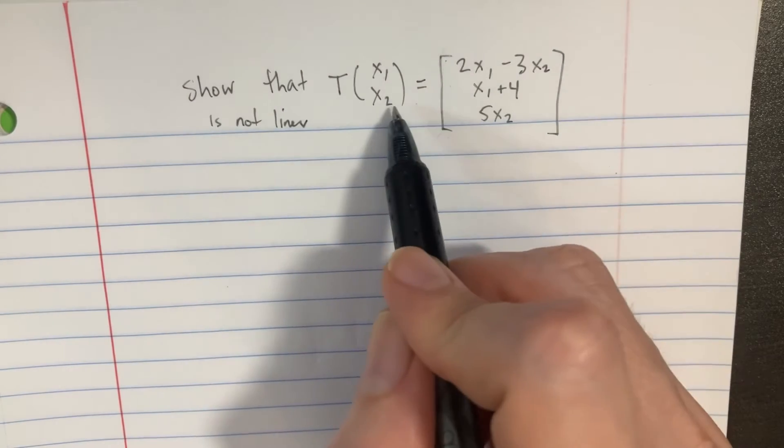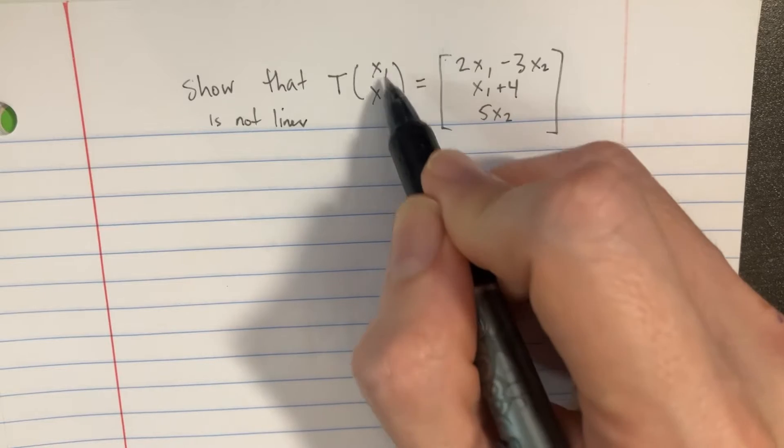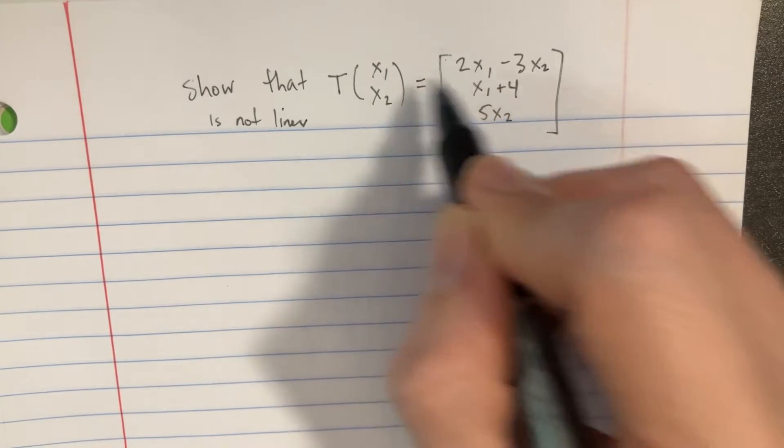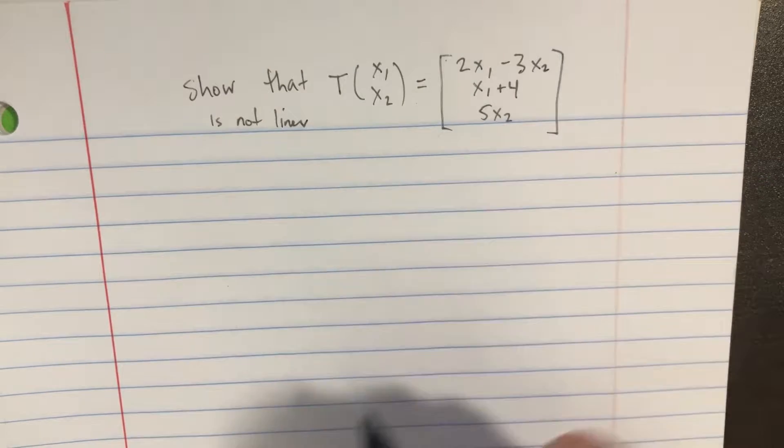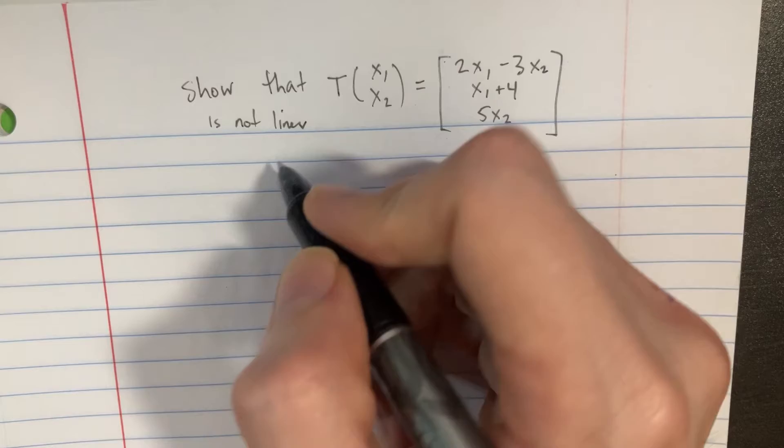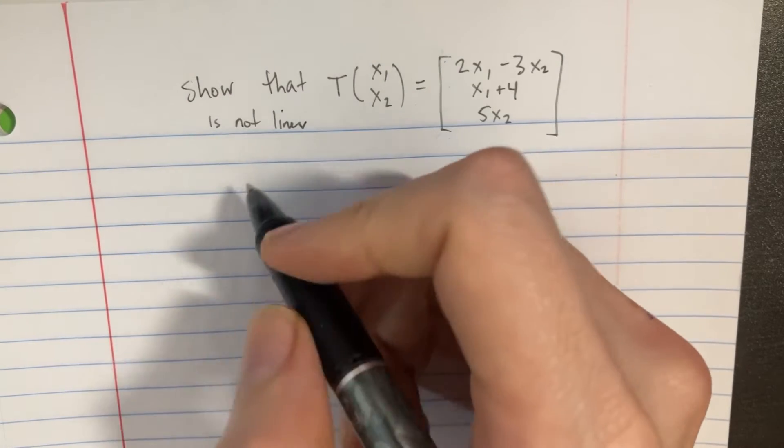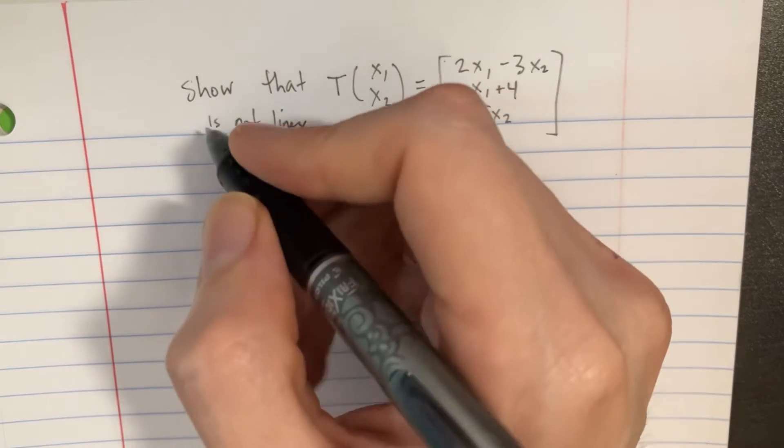We're trying to show that this transformation here is not linear. But before we do that, let's realize that if we were to change these little variables to maybe an A or a B, then so would all these. So this would become A, A, and that would become a B and a B. Now usually if we want to prove something is linear or not, we have to use either the additivity or the homogeneity properties. So let's work with the additivity one because that's a little more interesting.